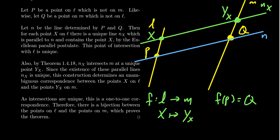Likewise, it's also going to be a one-to-one map. If you take any two different points on M, you're going to have two different lines parallel to n associated with them, which will give you two different X coordinates. So it's a one-to-one map.